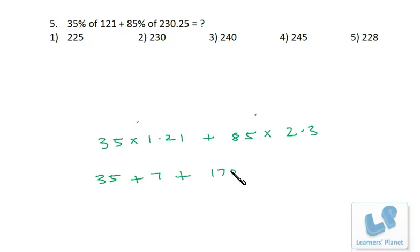Then 85 into 2 is 170, plus 85 into 3 is 255. So it's 25 point something, so that can be eliminated. Now this is 25 plus 35 is 60, 170 plus 60 is 230, and this is 237.